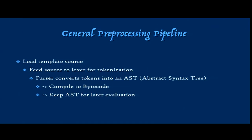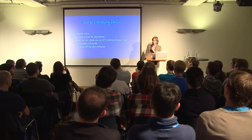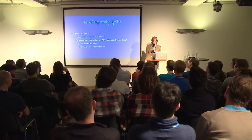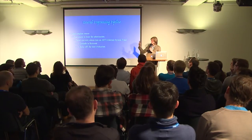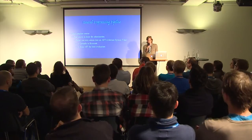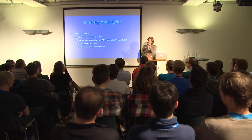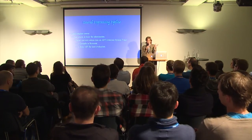In both cases, Django and Jinja do the same thing: they load a template source from some form — usually the file system, though lots of people load templates from databases. For instance, Shopify lets you upload your own templates onto their system. Then you feed the source to a lexer, making tokens out of it and converting them into a node tree. Most people using Django know what an AST is because you need to build custom template tags. In Jinja, it compiles to bytecode through a level of Python code, whereas in Django the AST is kept around and you render it later.